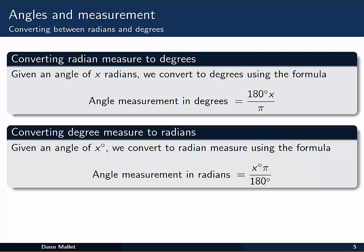So for example, given that we have an angle of x radians, we can convert that to degrees using this formula here. The angle in degrees is equal to 180 degrees times x divided by π, because there's 180 degrees per π radians.